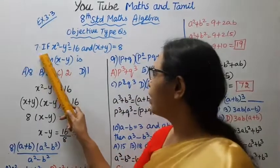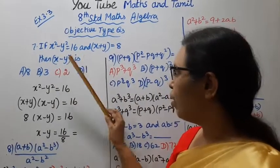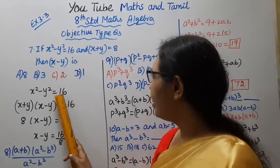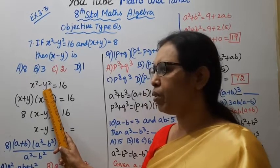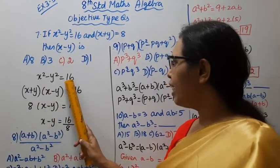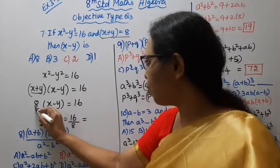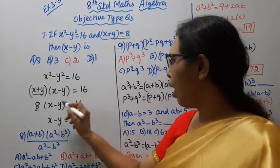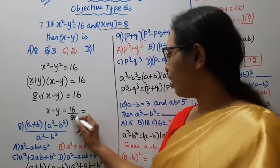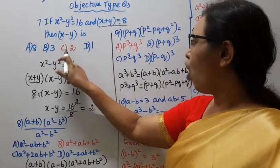Governing My Seventh Sum. If X squared minus Y squared equals 16 and X plus Y equals 8, then X minus Y is. The identity we know is X squared minus Y squared equals X plus Y into X minus Y. So 16 equals 8 into X minus Y. Therefore X minus Y equals 16 divided by 8, equals 2. Option C: X minus Y is equal to 2.